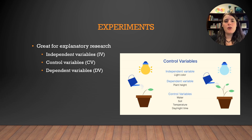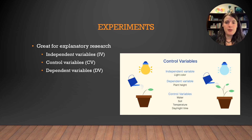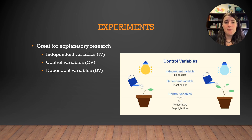Experiments are one of the ideal research designs for explanatory research. What an experiment allows you to do is manipulate the independent variable so as to see the change in the dependent variable. Also important in an experiment is making sure that all the other variables that may affect the dependent variable are held constant as control variables.